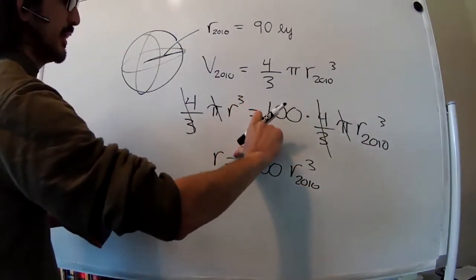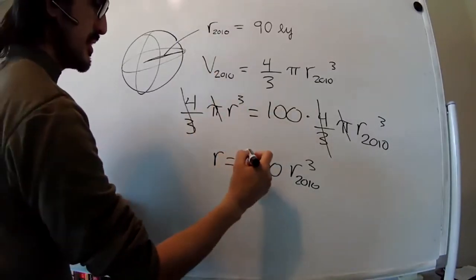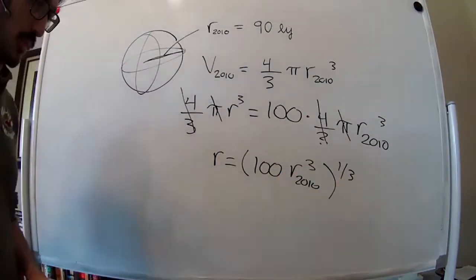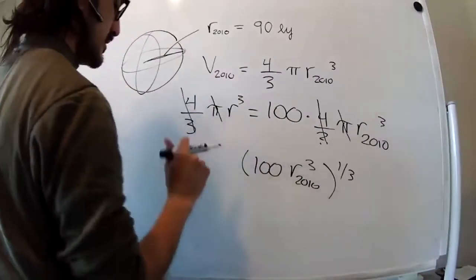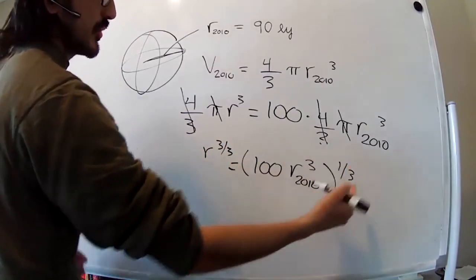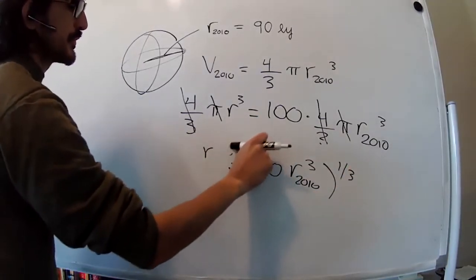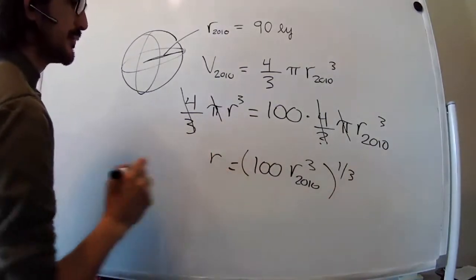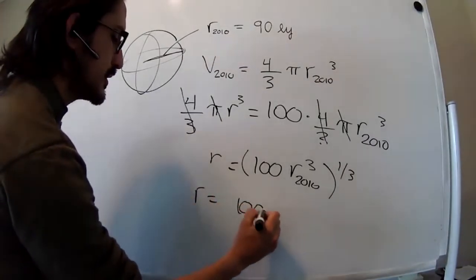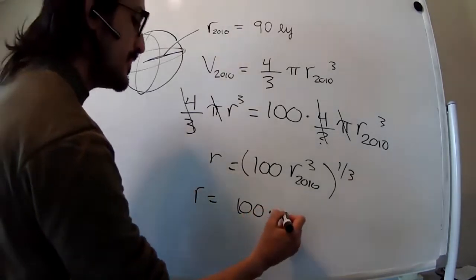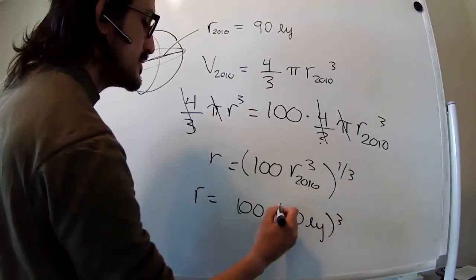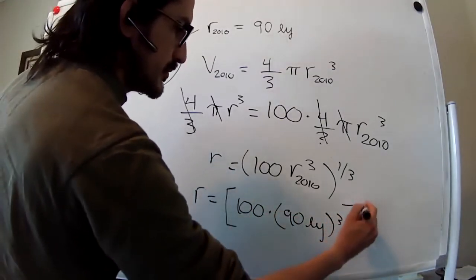But since we want the regular radius, which is no exponent, we can take the cube root. Right? So r³ over 3 equals to this over 3, and this 3 over 3 is just 1, right? So the radius is going to be 100 times 90 light years cubed to the 1/3.